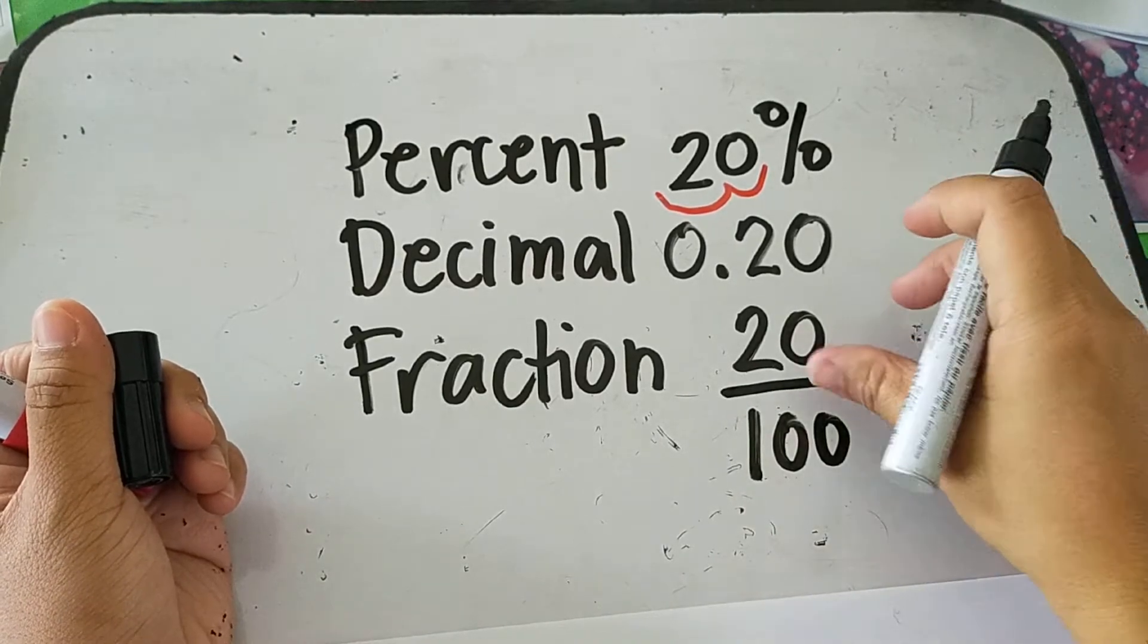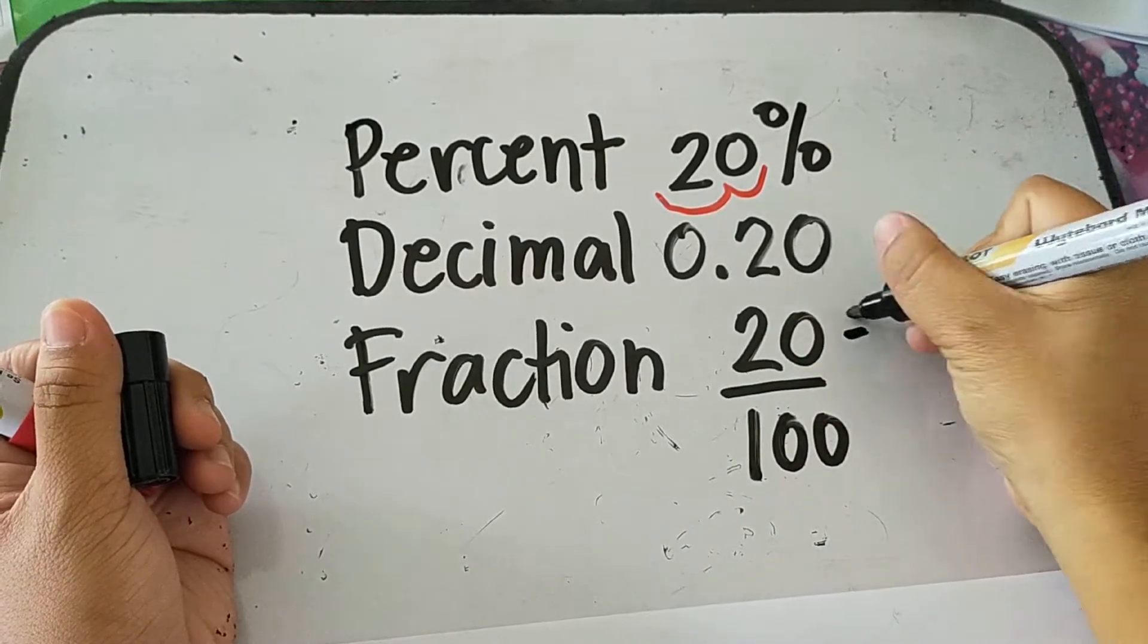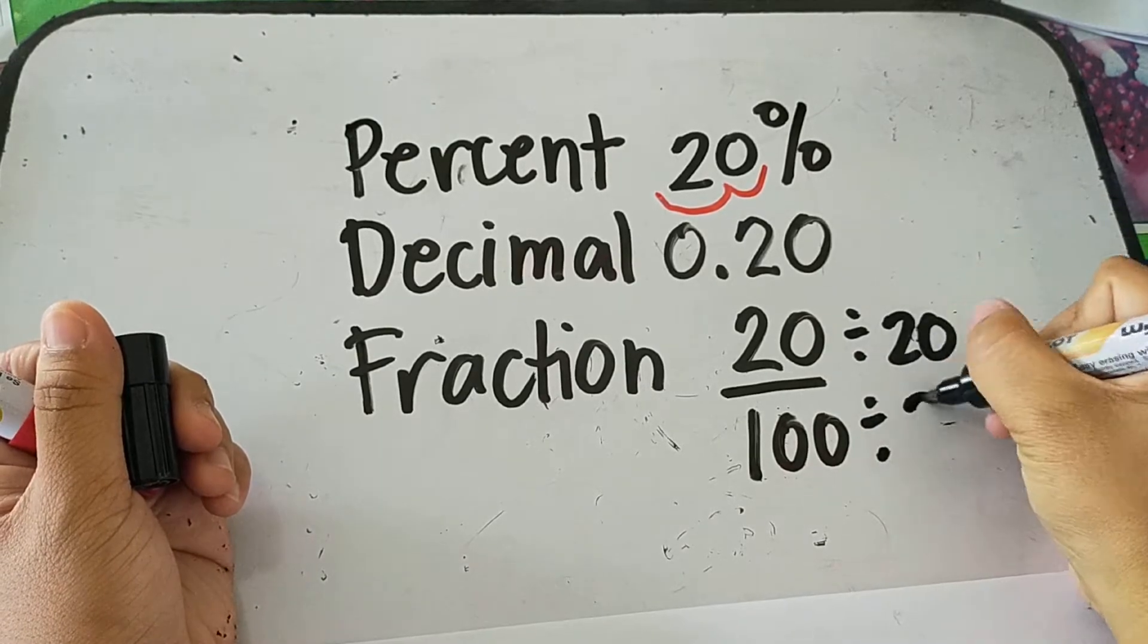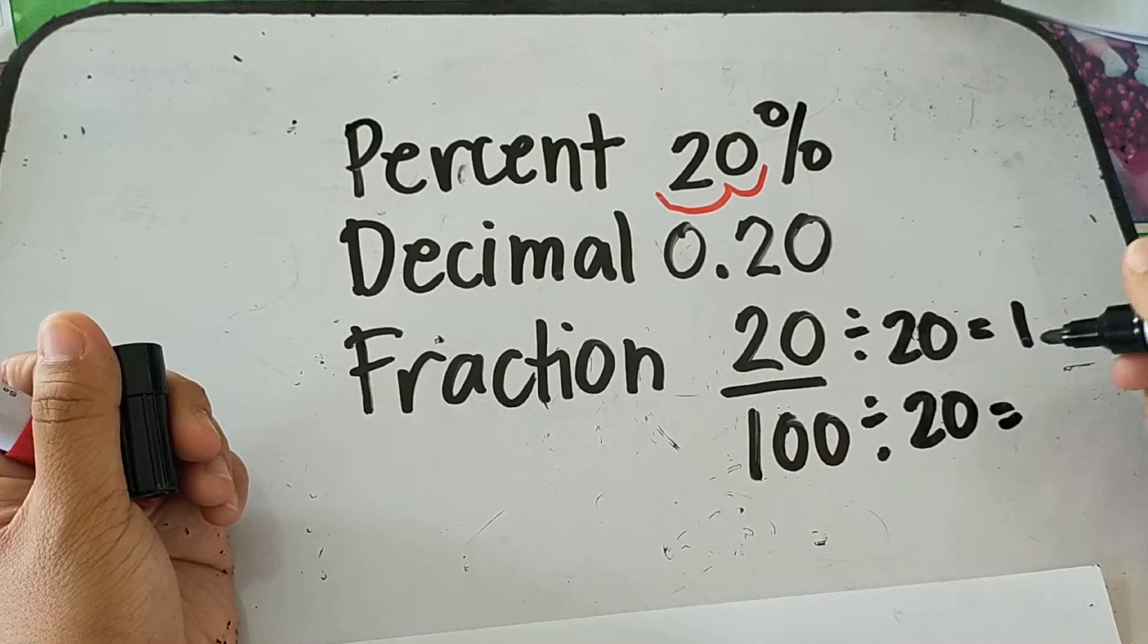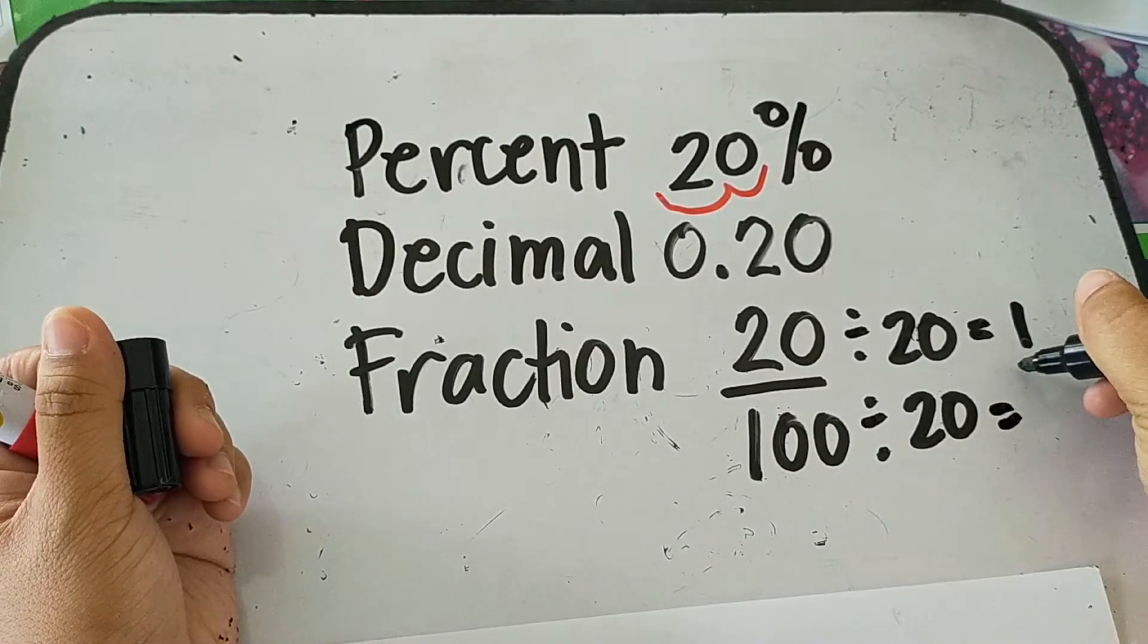So what is the GCF of 20 and 100? So 20. So 20 divided by 20 is 1. 100 divided by 20 is 5.